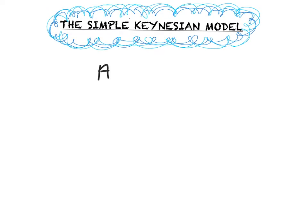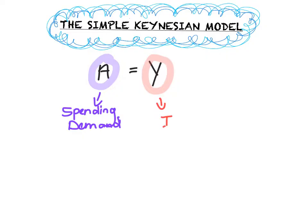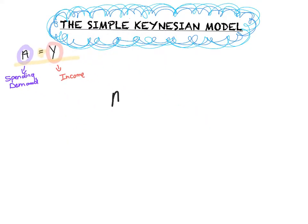Keeping this in mind, the model states A equals Y, where A denotes our spending or our aggregate demand, and Y denotes our income. As we know by now, production will generate income. This Y denotes both income and production which will be equal to one another. The equilibrium condition is where A equals Y, meaning spending equals income.